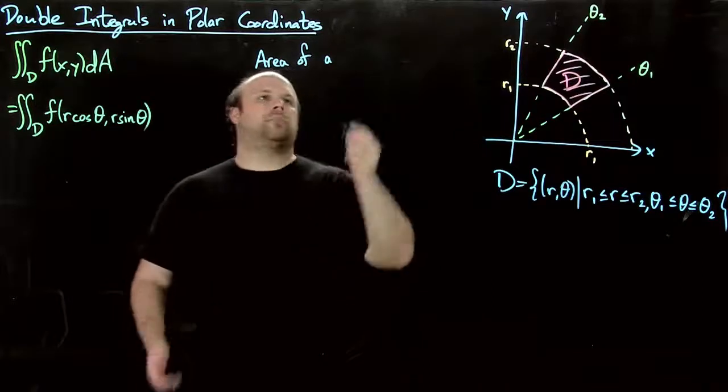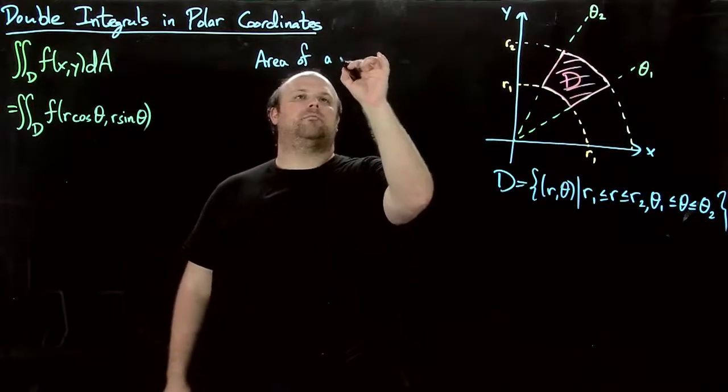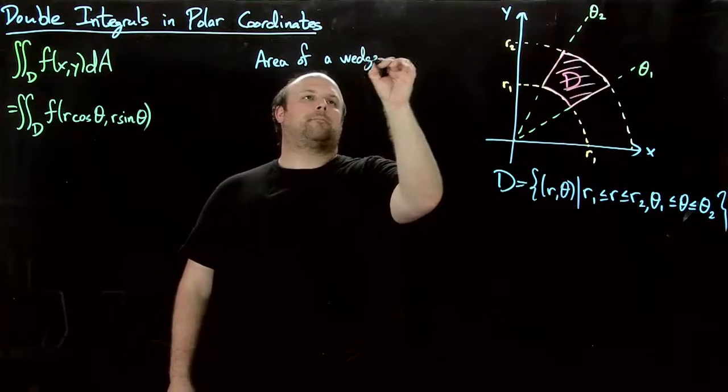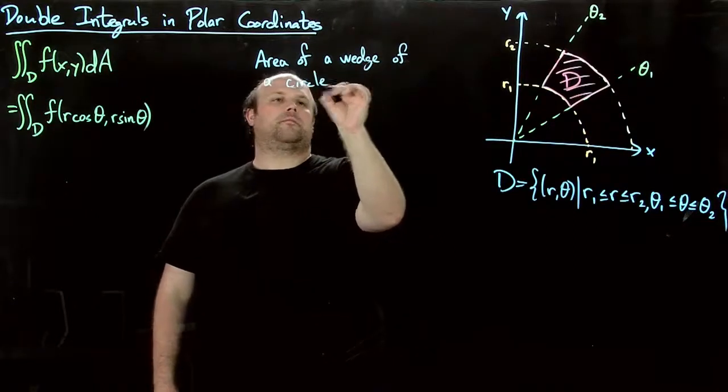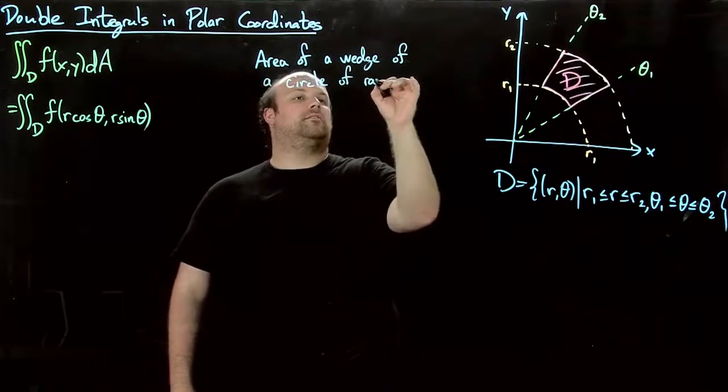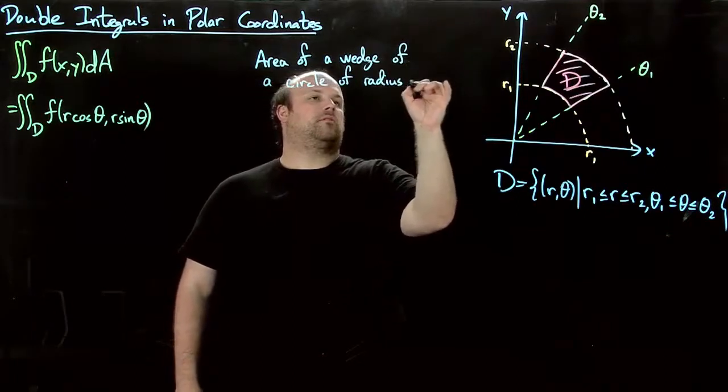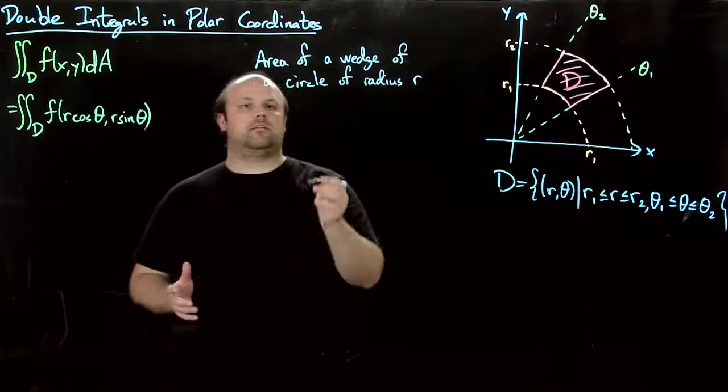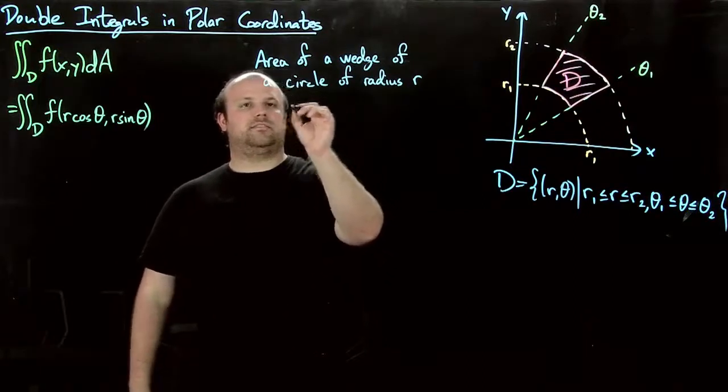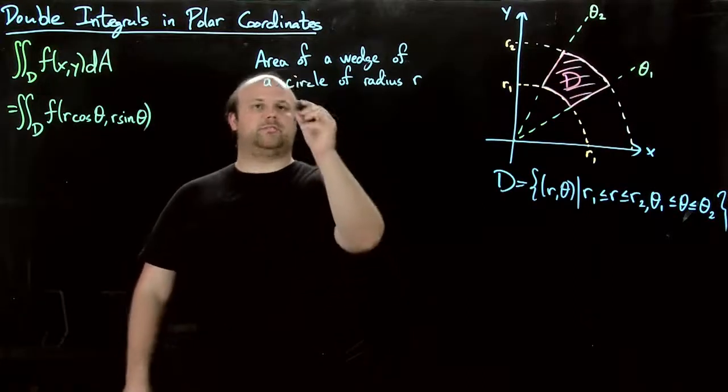All right. So area of a wedge of a circle of radius r. What is that? Well, this is, so actually, let's just draw the region real quick.